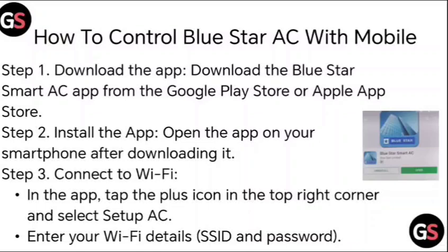Step 2: Install the app. Open the app on your smartphone after downloading it, then connect it to the Wi-Fi. In the app, tap the plus icon in the top right corner and select 'Setup AC'.